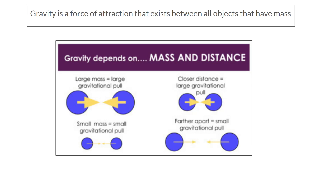Gravity is a mutual force of attraction that exists between all objects that have mass. So if something has mass, it has a force of gravity to it, and that force of gravity is pulling on all the other objects around it that have mass. But gravity depends on two things: mass and distance. The larger the mass, the larger the gravitational pull. But if you have two objects with smaller mass, their gravitational pull between themselves is quite small.